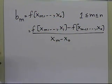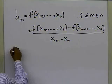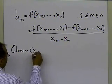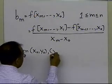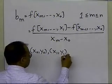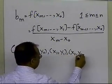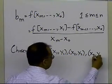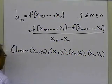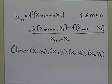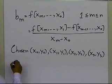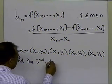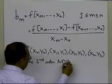Let's go ahead and see how this will work out for a third-order polynomial. So let's suppose we have chosen x0, y0, x1, y1, x2, y2, and x3, y3. So somebody gives us four data points, and we want to find the third-order Newton's divided difference polynomial.